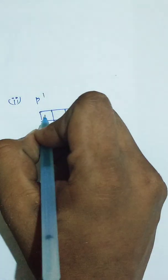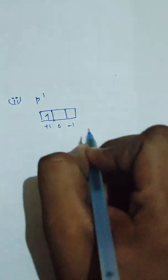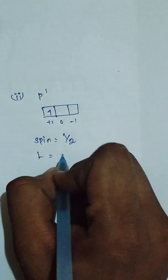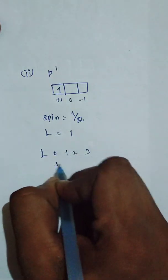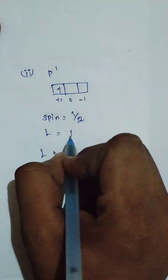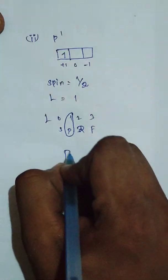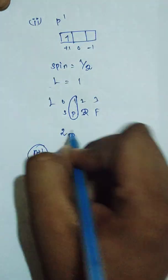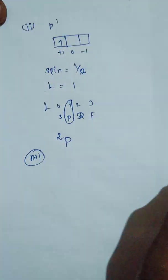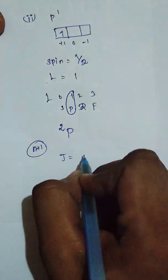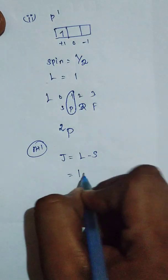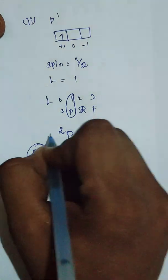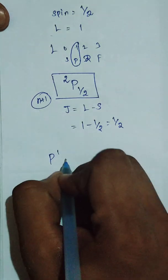For p1: the p orbital has three subshells — plus one, zero, minus one. With one electron, spin equals half and L equals plus one, so the term letter is P. Spin multiplicity: n plus one equals one plus one equals two. It is a less-than-half-filled configuration, so we use J equals L minus S: one minus half equals half. The term symbol for p1 is ²P₁/₂.